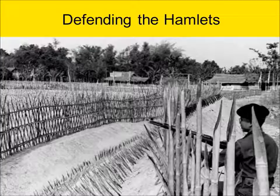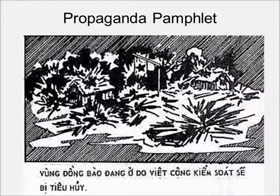While many of these hamlets were secure, at least initially, many residents felt isolated. In some cases, government removal agents — to show that returning to the home villages was no longer an option — actually burned the vacated houses as villagers left their original homes. To help convince peasants to relocate to strategic hamlets, intense propaganda needed to be developed and implemented. Many peasants were highly reluctant to leave their ancestral villages; some had to be forcibly relocated.